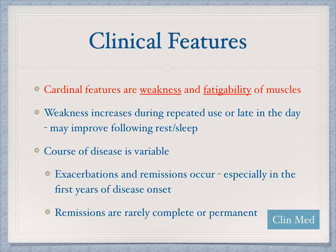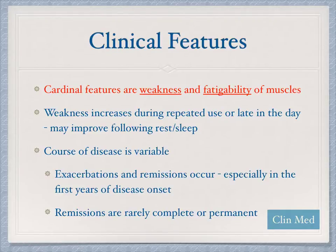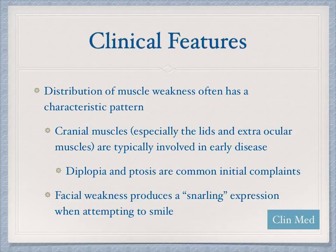The cardinal features of this disease are weakness and fatigability of muscles. Weakness increases during repeated use or late in the day, and typically improves following rest and sleep. The course of the disease is completely variable — everybody is different, which is why treatment will be individualized. Exacerbations and remissions can occur, most commonly in the first few years as you're trying to get the disease under control with medications.